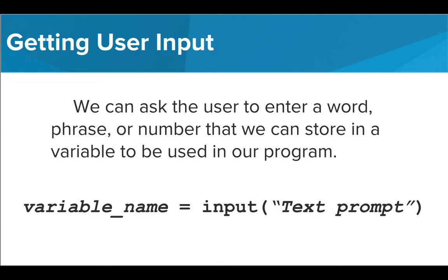To save the input that the user gave, we assign it to a variable. We type the name of our variable followed by an equal sign. Instead of entering a value for the variable ourselves, we use the command input followed by a set of parentheses. Inside the parentheses, we write the text prompt that we want the users to see inside quotation marks.